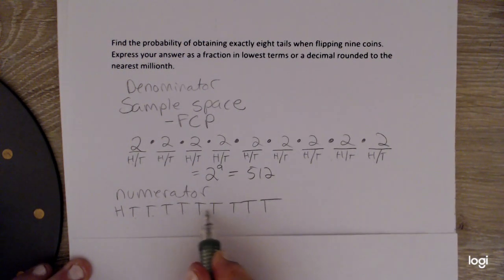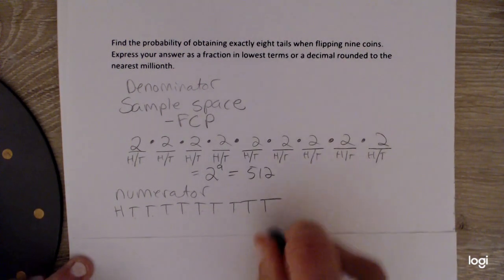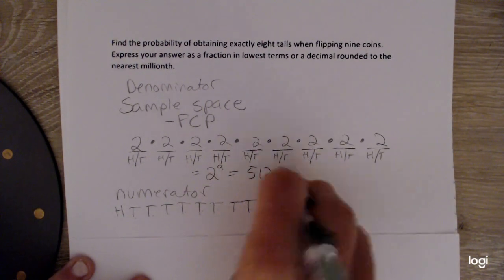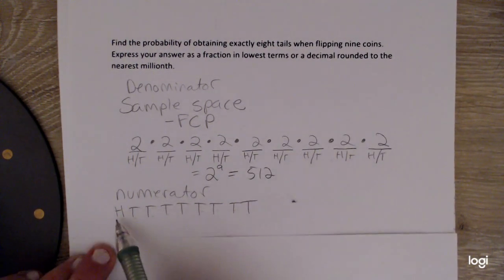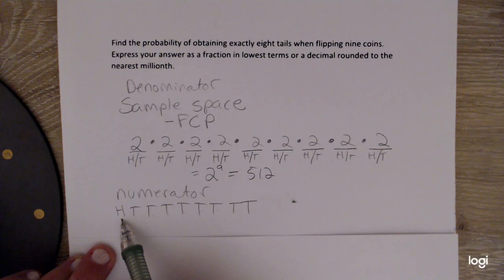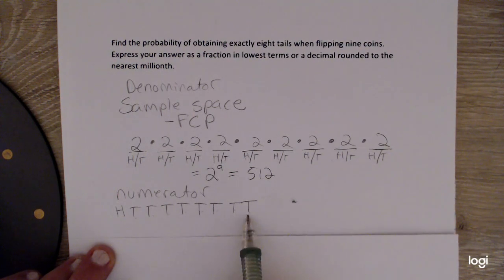and then the rest of them are tails. So you have 1, 2, 3, 4, 5, 6, 7, 8. Whoops, one too many tails. Okay, so I could have the first flip be a head, and then eight subsequent tails.